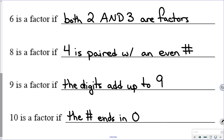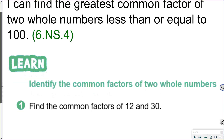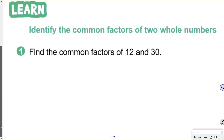So those are our factoring rules, and hopefully those will help you as we go into our lesson where we factor out numbers. Our objective for today is to find the greatest common factor of 2 whole numbers less than or equal to 100. Before we get to the greatest common factor, we will be identifying common factors, but first we need to have a list of factors. So we want to find the common factors of 12 and 30.